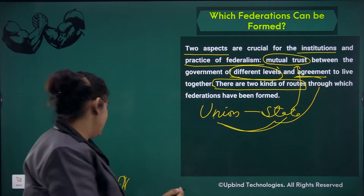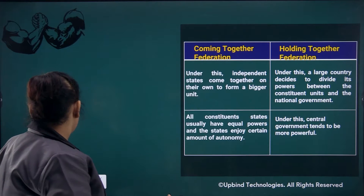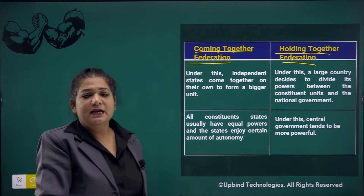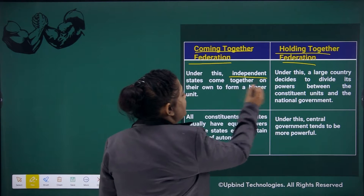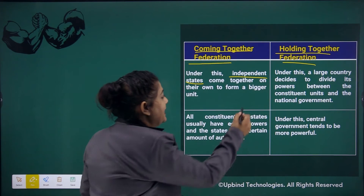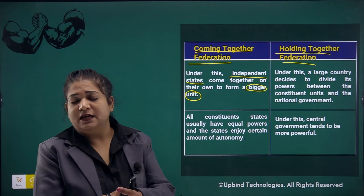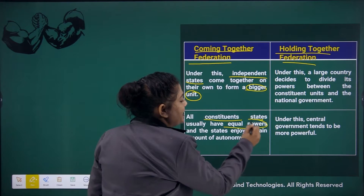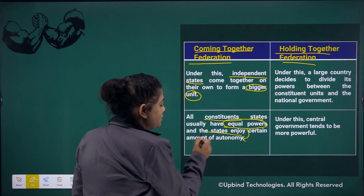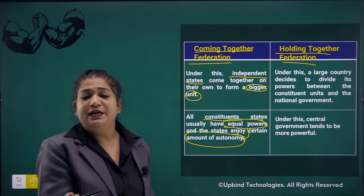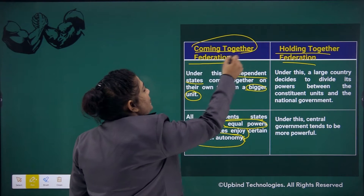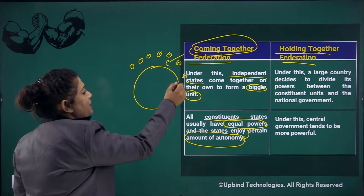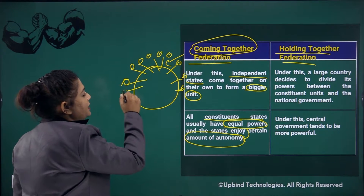Come to the next slide — that is the two aspects: the coming together federation and the holding together federation. In coming together federation, all independent states come together and form a bigger unit — that is coming together. The constituent units or states have equal power, and the states enjoy a certain amount of autonomy. Coming together means small units joining to form a bigger unit.